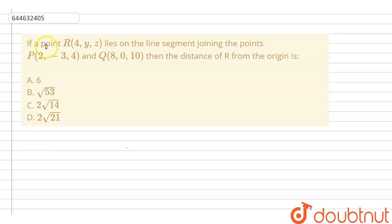In this question, given that if a point R with coordinate 4, y, z lies on the line segment joining the points P and Q, then the distance of R from the origin is?